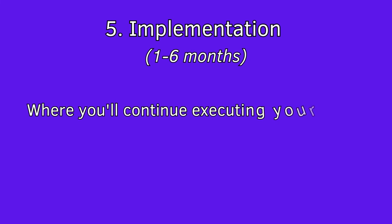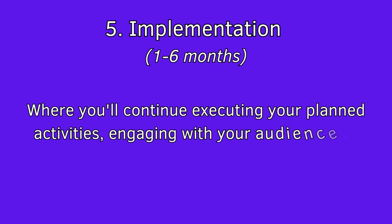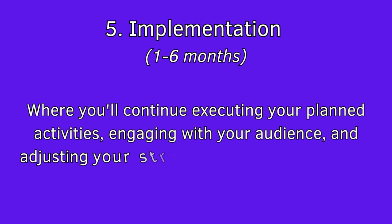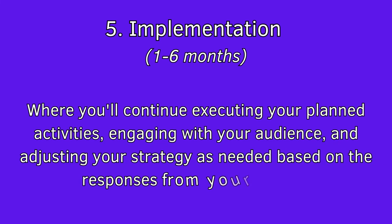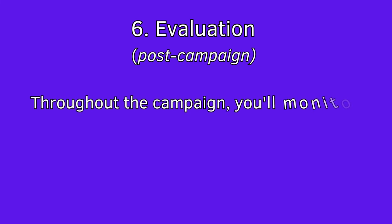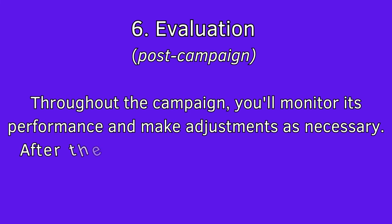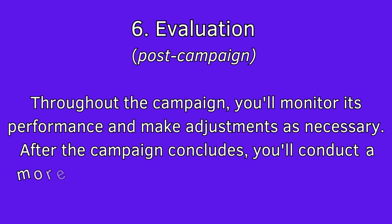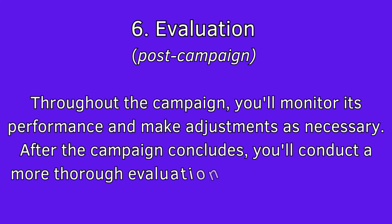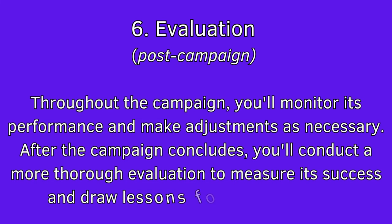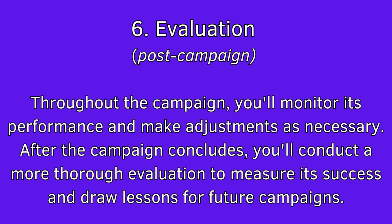Stage 5: Implementation, 1-6 months. This is the bulk of your campaign, where you will continue executing your planned activities, engaging with your audience, and adjusting your strategy as needed based on the responses. Stage 6: Evaluation — ongoing and post-campaign. Throughout the campaign, you will monitor its performance and make adjustments as necessary. And after the campaign concludes, you will conduct a more thorough evaluation to measure its success and draw lessons for future campaigns.